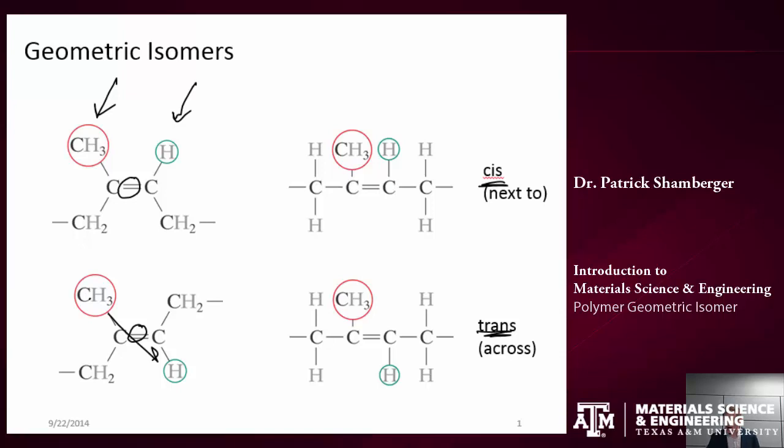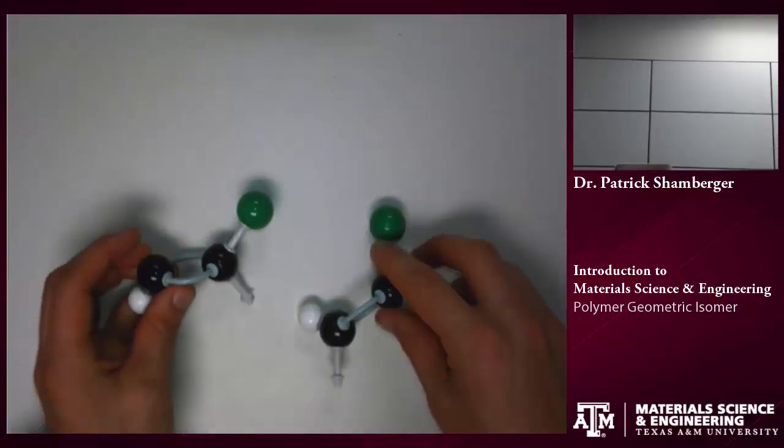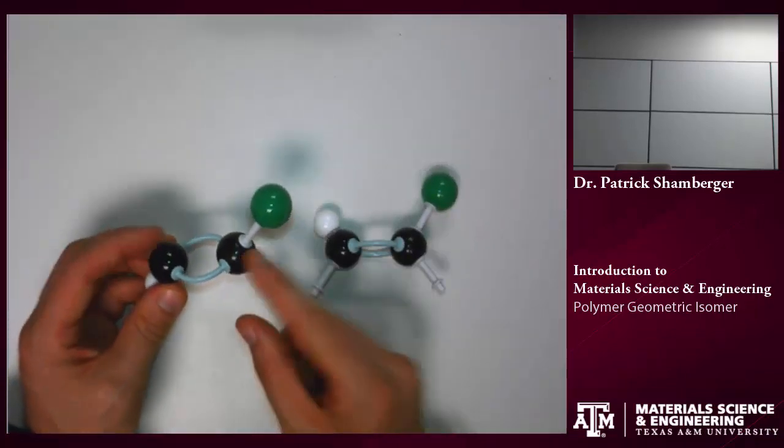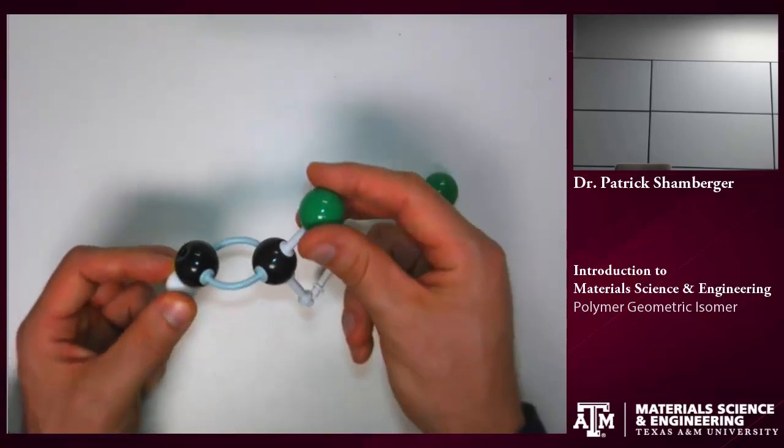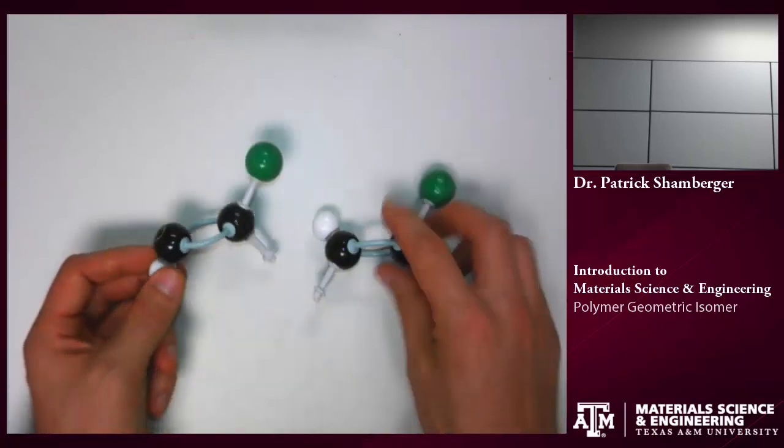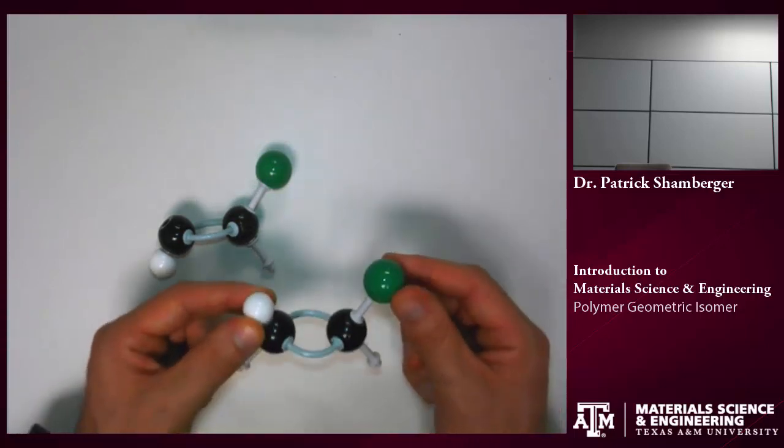So, let's look at a couple examples on a 3D model. These are two different repeat units. In one case, I have the trans configuration. So, this side group is diagonally across the repeat unit from this side group. In the other case, I have a cis configuration. So, these two side groups are next to each other.